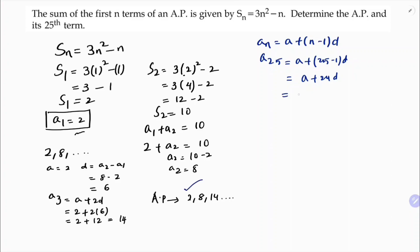The value of a is 2, so it's 2 plus 24 into 6, which is 2 plus 144, so 144 plus 2 is 146. So the 25th term is 146 and the series is 2, 8, 14, and so on.